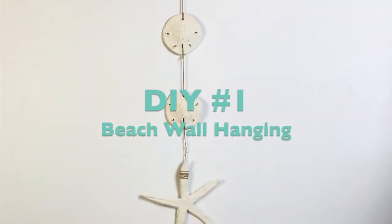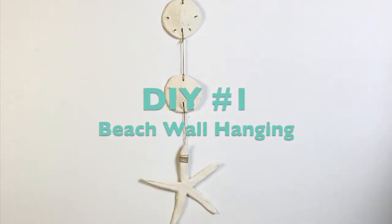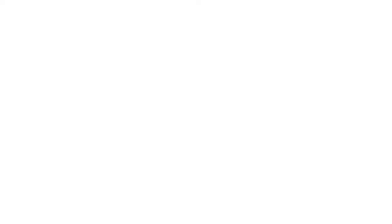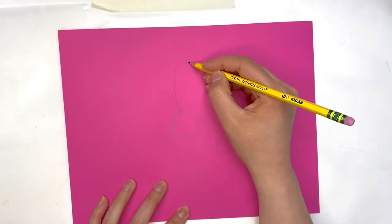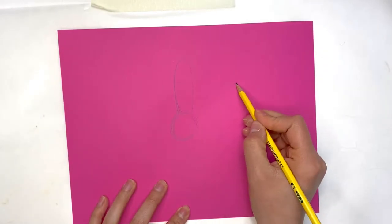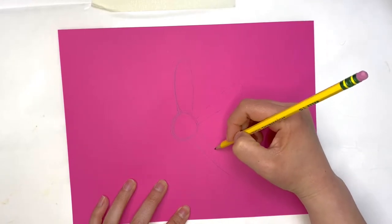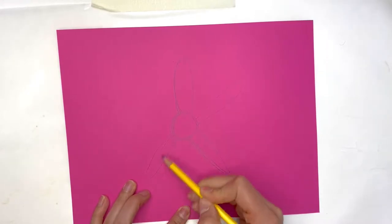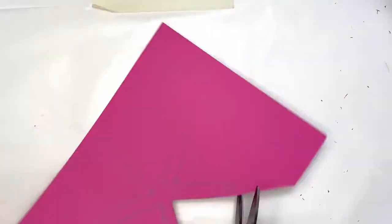Our first DIY today is this beachy wall hanging that I made out of air-dried clay. I'm going to start by showing you how I made the starfish. So I used some cardstock to draw a starfish shape onto it and create a template, and then I cut it out.